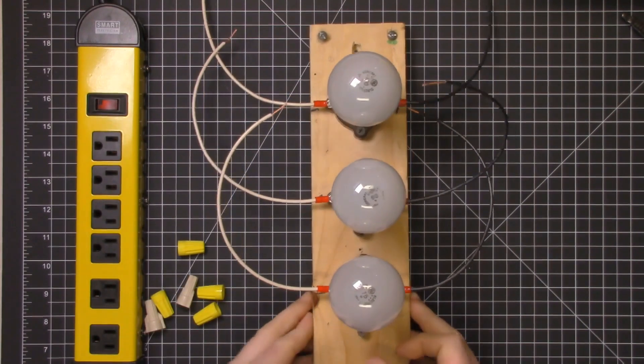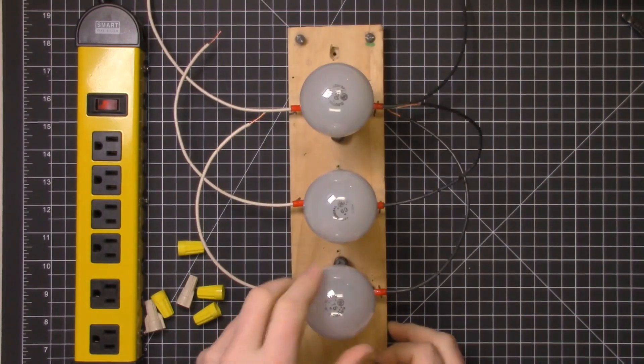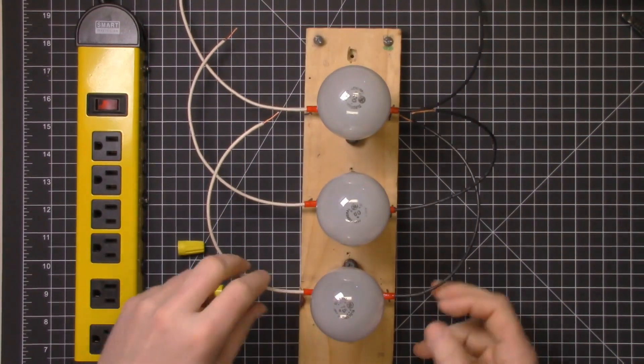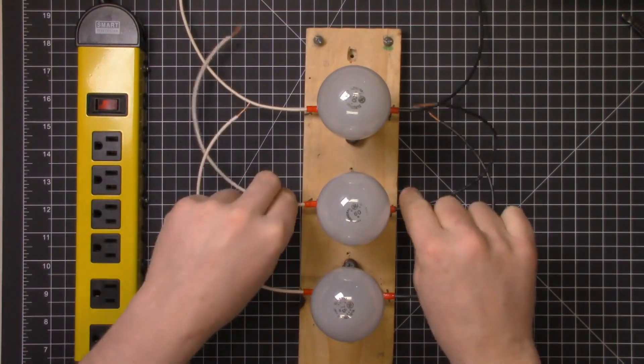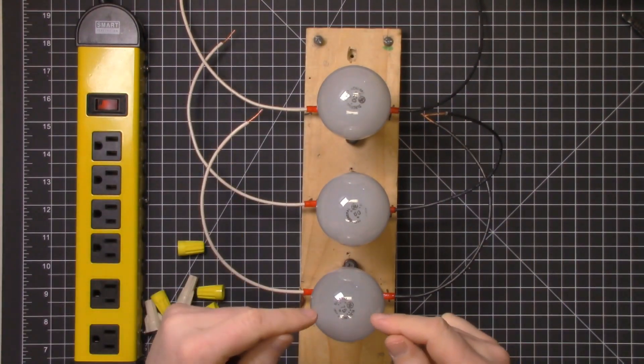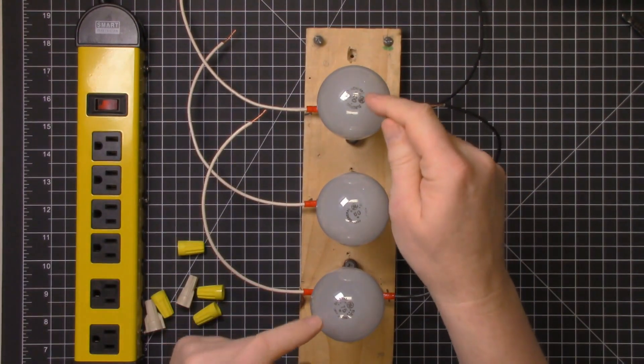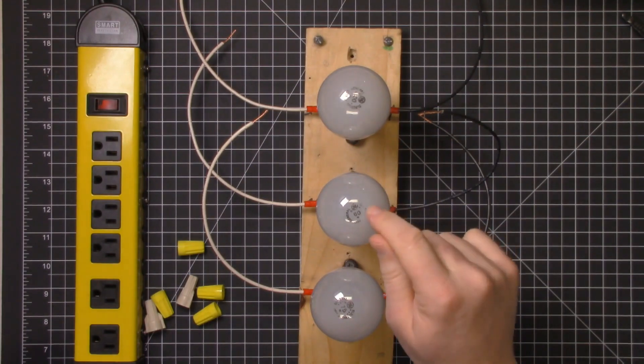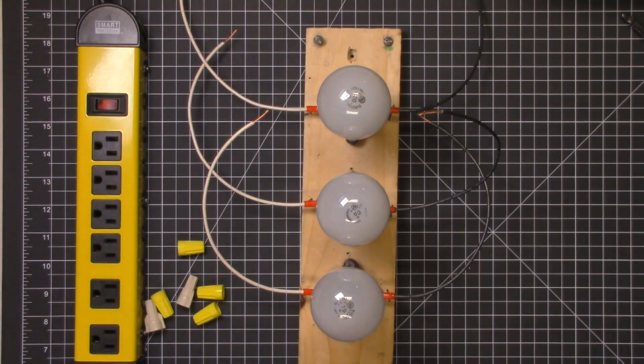Then I have three light bulbs and these light bulbs are pre-wired a little bit anyway, so they've each got a black and a white lead on them and they are of different wattages. So I have a 100 watt, a 60 watt, and a 75 watt light bulb.